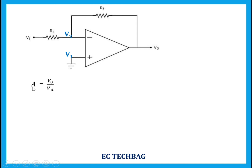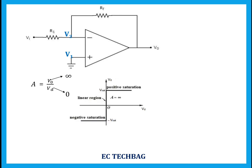From this equation, if A is infinity, one possibility is that the numerator should be infinity. The second is that the denominator should be zero. The numerator being infinity is not possible because the numerator is the output voltage, and in an operational amplifier the output voltage cannot be infinity — it is normally limited by the supply voltage VCC.